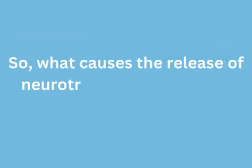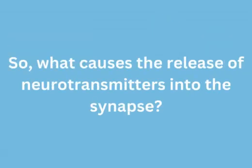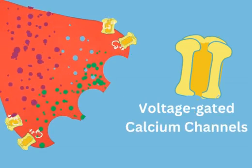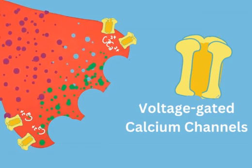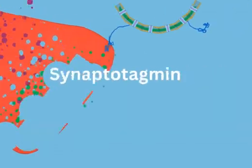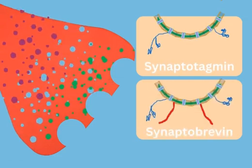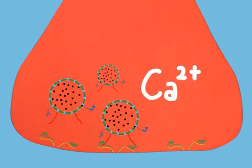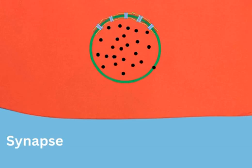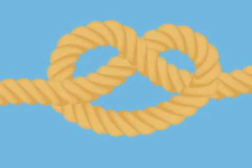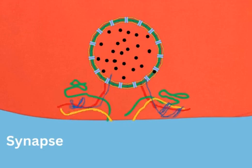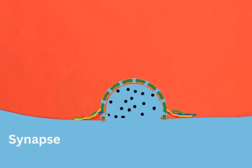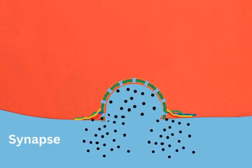What causes the release of these neurotransmitters into the synapse? When an action potential reaches the axon terminal, the depolarizing current triggers the opening of voltage-gated calcium channels. The influx of calcium activates the V-snare protein synaptotagmin. Located on the vesicles, two V-snare proteins — synaptotagmin and synaptobrevin — play a vital role in regulating neurotransmitter release. In the presence of calcium, they interact with T-snare proteins on the cytoplasmic side of the axon terminal. The V-snares and T-snares twist together to form a snare complex, pulling the vesicle closer to the cell membrane and eventually resulting in fusion, dumping the vesicle contents into the synapse.